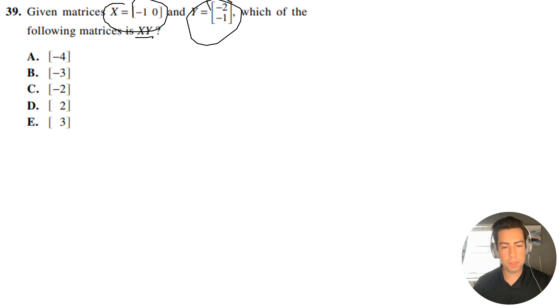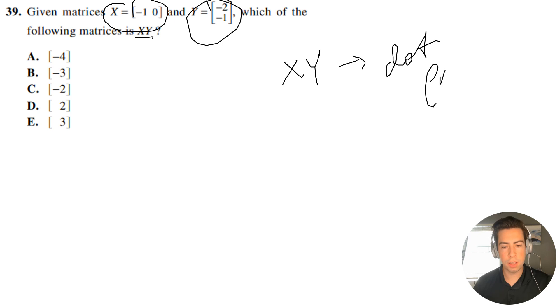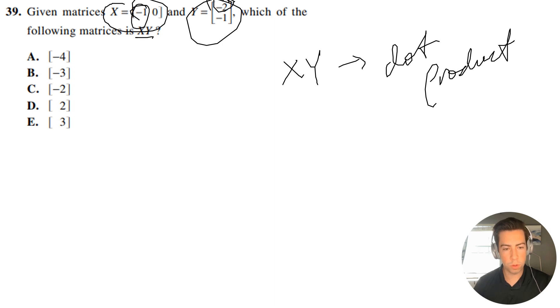So this is called — anytime you multiply two matrices together, this is something that's known as the dot product. Basically the way that it works is you're going to take this term and then multiply it with its corresponding term, which is negative two.